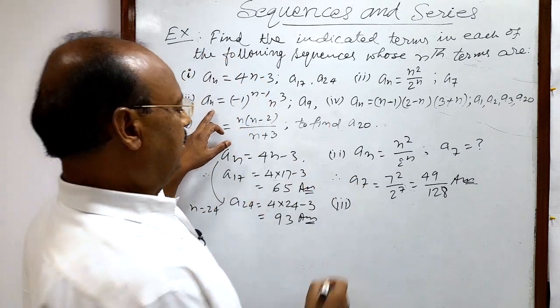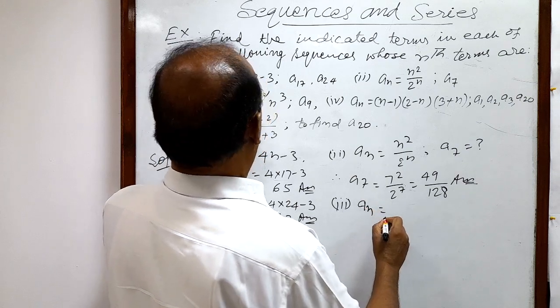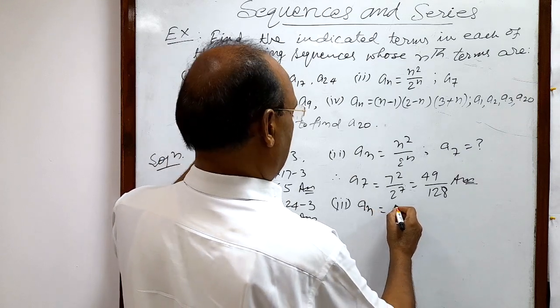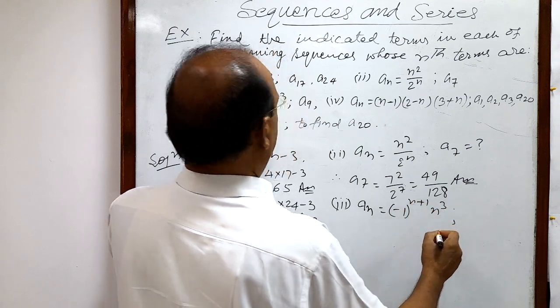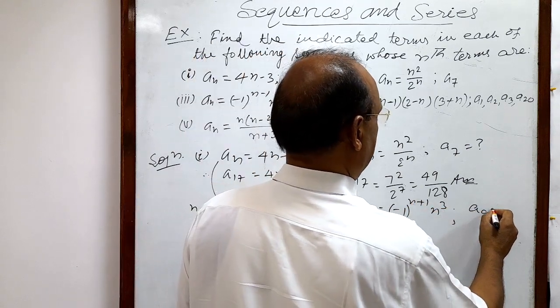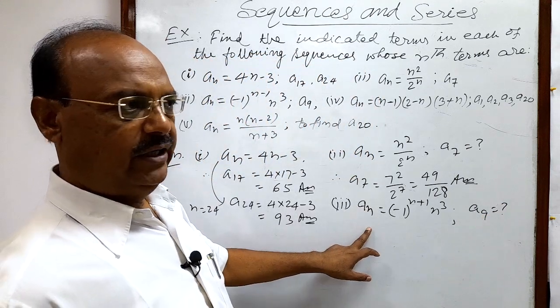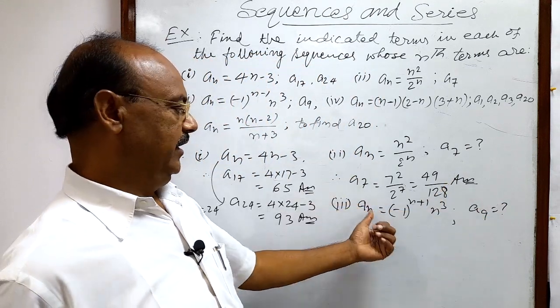Here given general term an is equal to minus 1 to the power n plus 1, n cube. We have to find out a9. Here we will replace n by 9, then we will get a9.